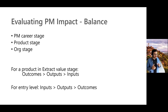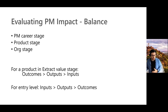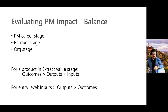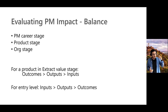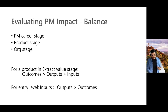Now you might ask: what about if someone is mid-level but has a very big scope? How do you know exactly when to move these weights? I mentioned that as the PM grows in career stage, you might move from giving more weight to inputs, then to outputs, and then later to outcomes. But how do you decide that? When do you say this is the right time to change the weights and measure impact slightly differently for this person?